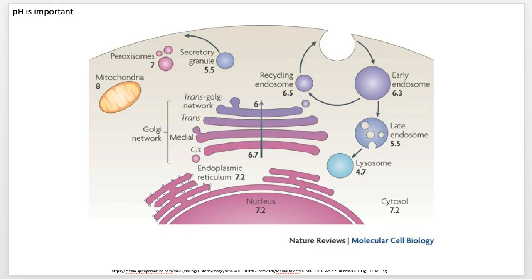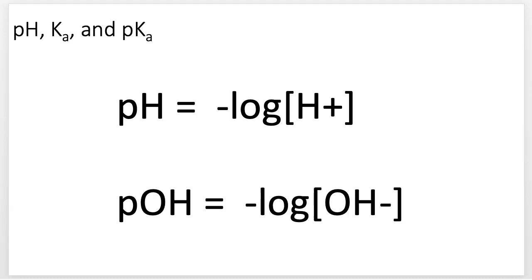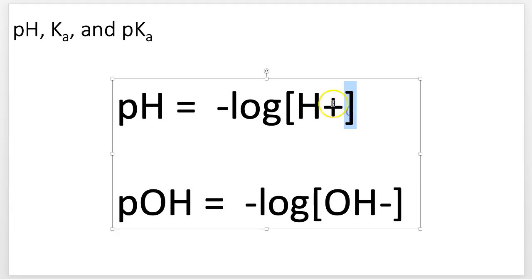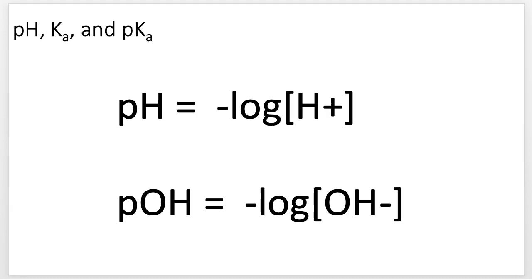In order to talk about pH, it's something you may have encountered before, especially in general chemistry. The H refers to hydrogen ions, the OH refers to hydroxide ions, and the P means you're going to take the negative log. If we take the negative log of the concentration of hydrogen ions — brackets indicate concentration — that gives us the pH.